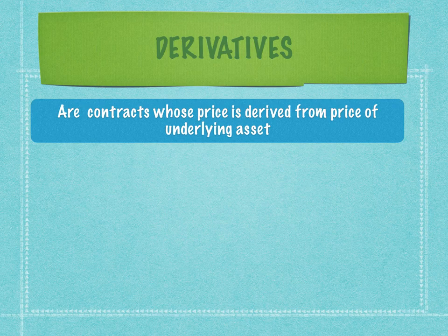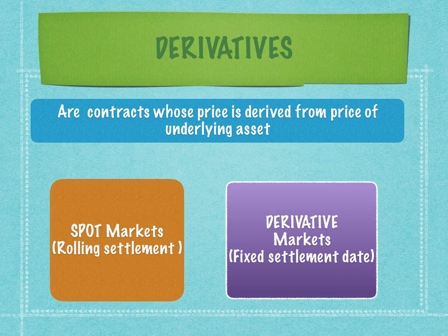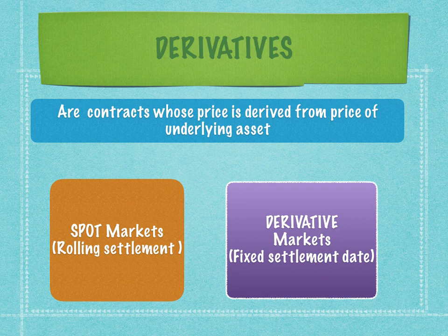The broad definition given in most financial books is that derivatives are contracts whose price is derived from the price of the underlying asset. So there is an underlying asset and there is a derivative contract — two separate trades: the spot market trade and the derivative market trade. The spot market trade typically comprises instruments like equities or bonds, which are traded but settled on a rolling settlement.